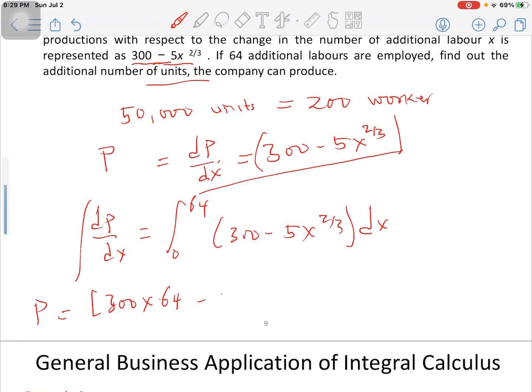Minus 3 multiply by 64 to the exponent 5/3.